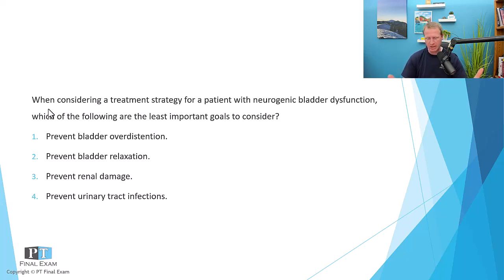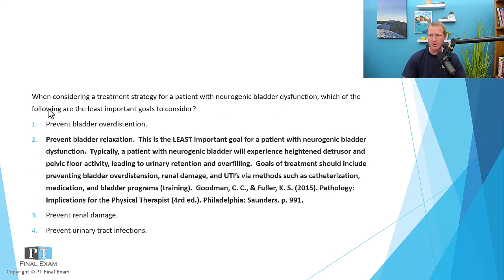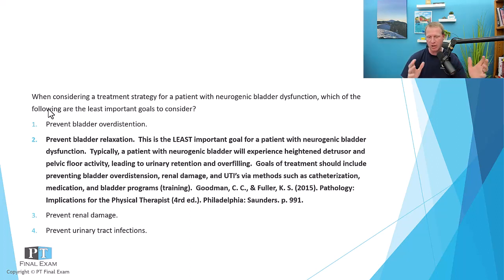This question is obviously talking about neurogenic bladder dysfunction. The correct answer is number two — preventing bladder relaxation — because neurogenic bladder is typically manifested by a hyperreflexic or spastic bladder where you have excessive detrusor activity. With that spasticity, you not only have spasticity of the detrusor but also spasticity in the urethral sphincters, specifically the internal urethral sphincter, which is under smooth muscle control. Excessive contraction of the pelvic floor leads to urinary retention.